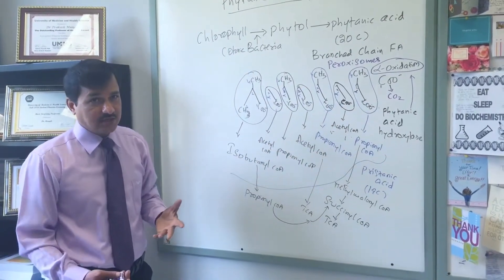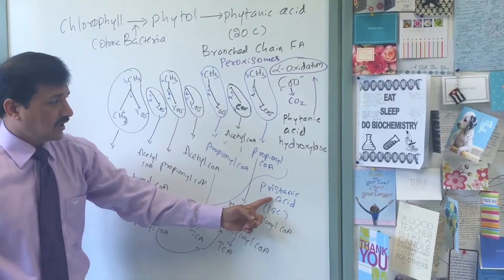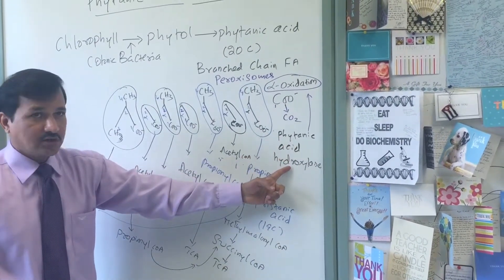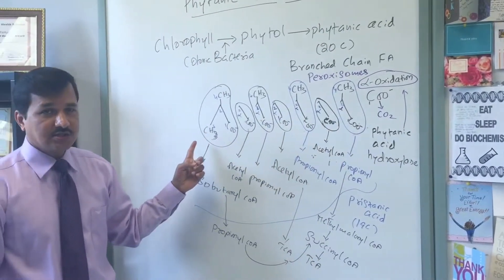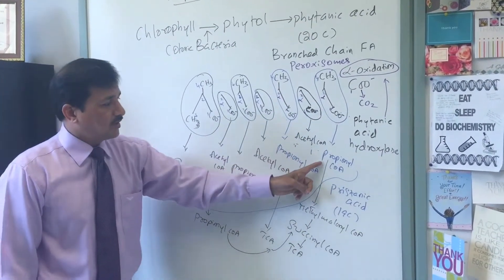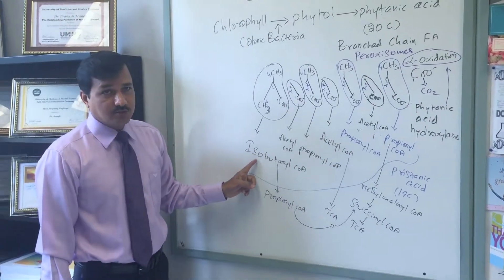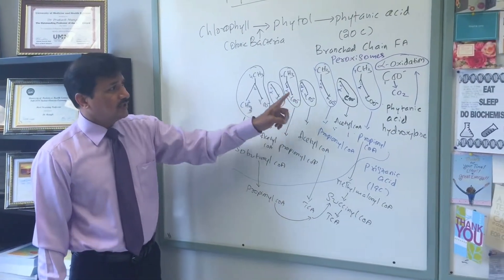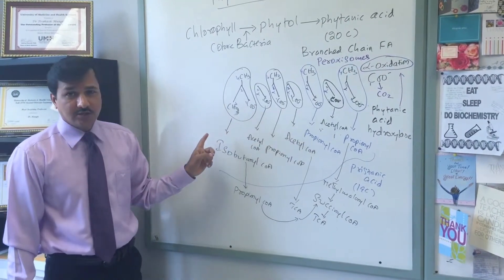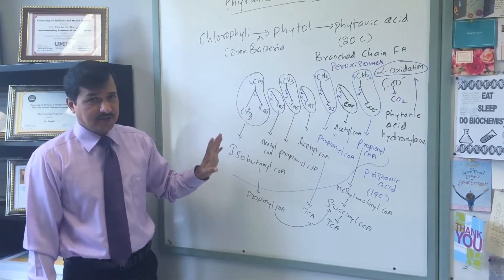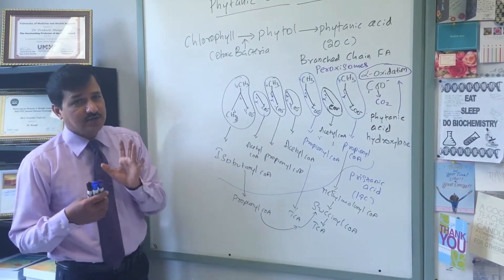So how do we oxidize phytanic acid? Initially it is oxidized into pristanic acid by phytanic acid hydroxylase, and then pristanic acid undergoes beta oxidation releasing 3 propionyl-CoA, 3 acetyl-CoA, and 1 isobutyryl-CoA. Initially this beta oxidation occurs in the peroxisome; later it is continued in the mitochondrial matrix. Once the chain length reaches 10 carbons, it is transferred to the mitochondria for continued beta oxidation.